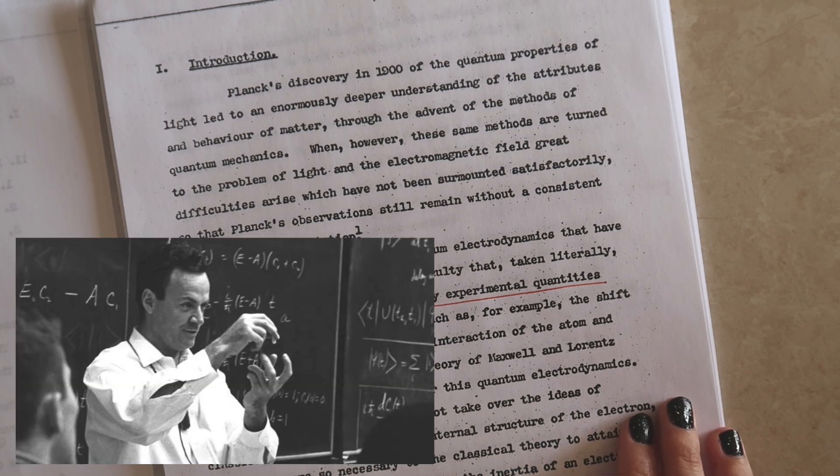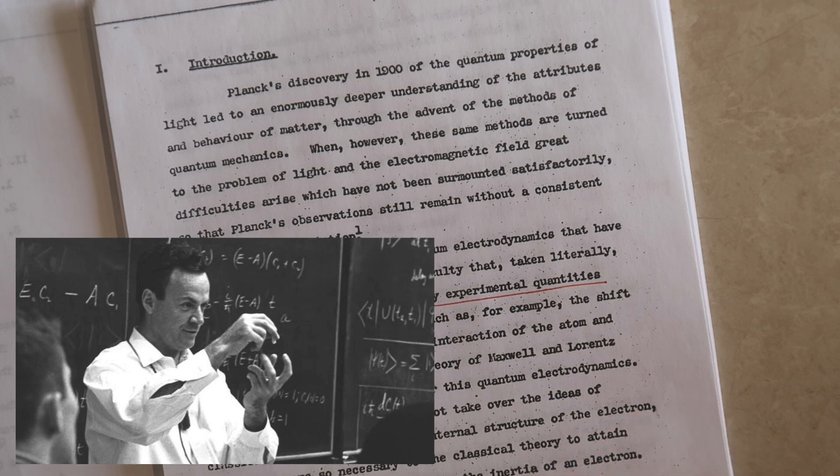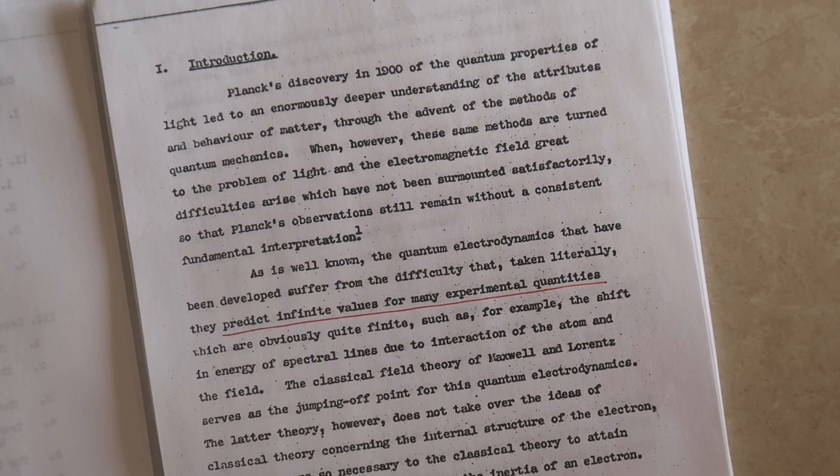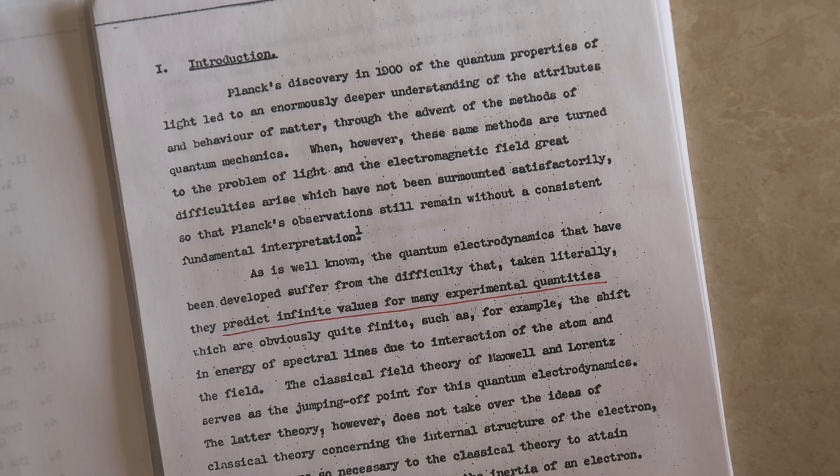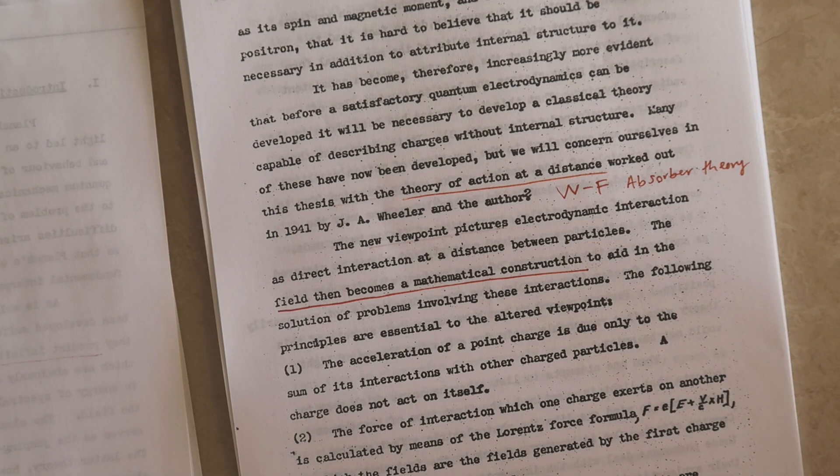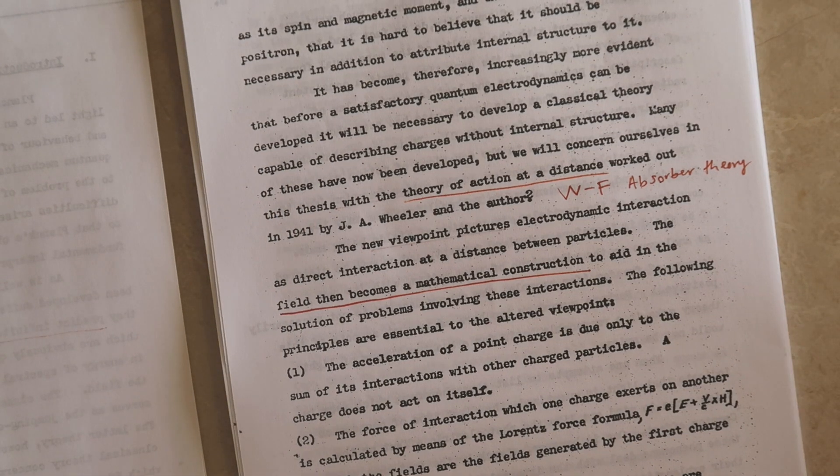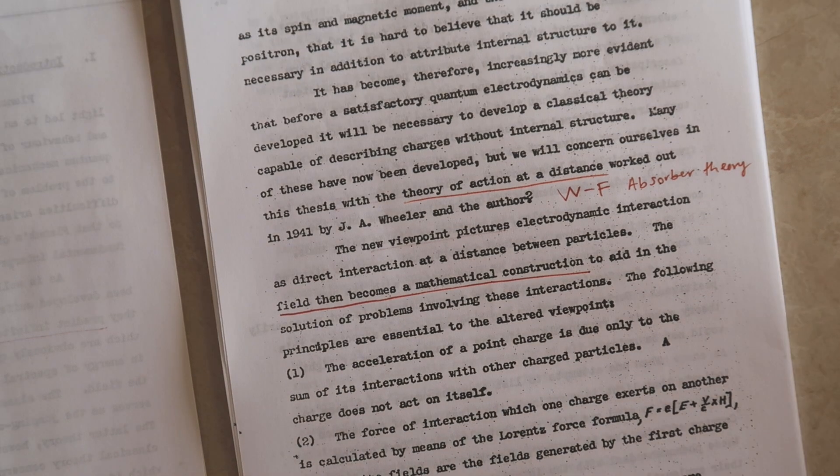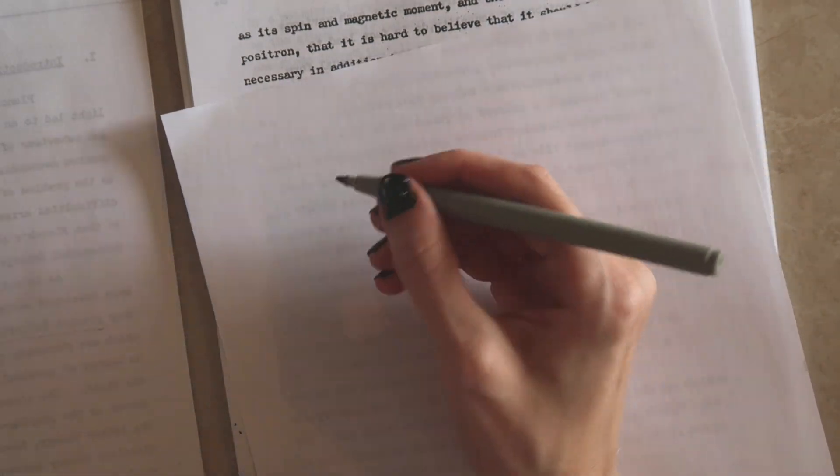In fact he thought that the idea that a particle could act on itself is in fact a silly one and instead suggests that electrons cannot act on themselves they can only act on other electrons. There's no field, just a direct interaction between charges although with a delay. For example he says that if an electron in the Sun were to shake then an electron in your eye would shake eight minutes later. There was one big obstacle to this idea however.